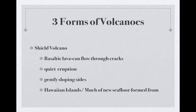There are three forms of volcanoes — these were vocabulary words last week. Number one is the shield volcano. These have basaltic lava that can flow through cracks, quiet eruptions, and nice gentle slopes. The Hawaiian islands are an example — much of the new seafloor is also formed this way. The Hawaiian islands sit on hot spots, so lava comes out very slowly.